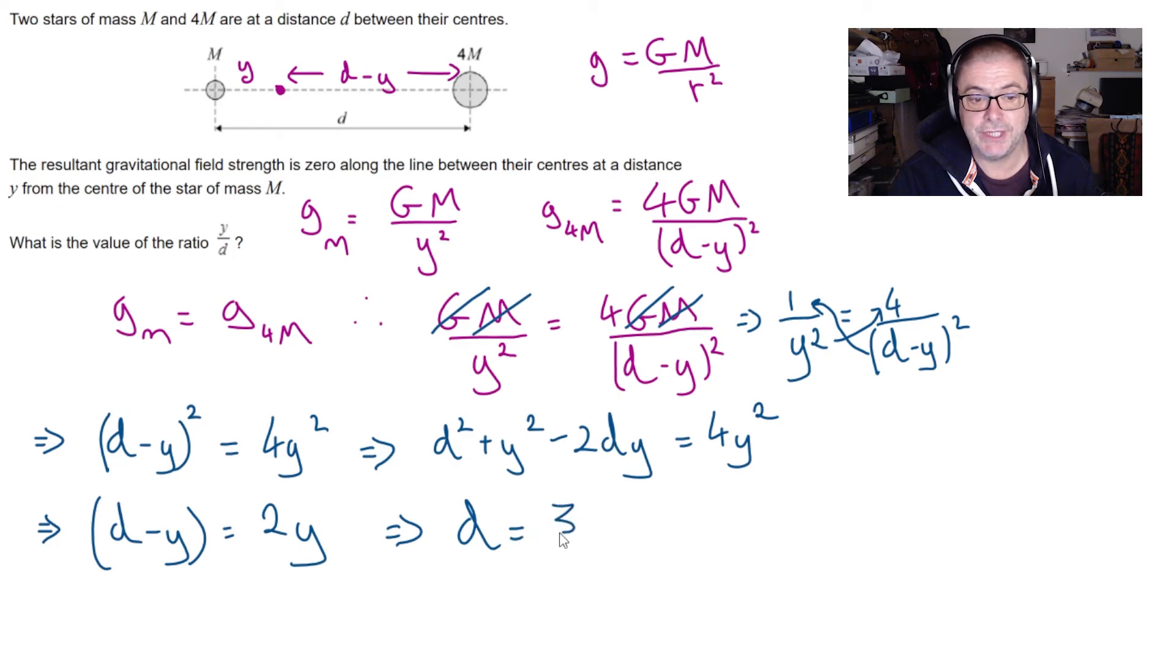Rearrange that to give us that d equals 3 y. Which then means that d over y equals 3. Which means we now have to invert that to get the answer that we require. This means that y over d is 1 over 3. And as ever that's the answer to the question.